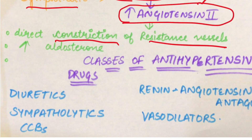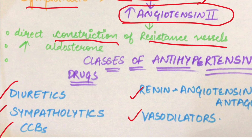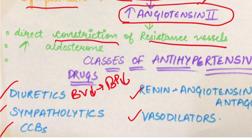If we want to treat hypertension, we give anti-hypertensive drugs. The classes are: diuretics, sympatholytics, CCB (calcium channel blockers), renin-angiotensin antagonists, and vasodilators. Diuretics like thiazides and loop diuretics are used because they reduce blood volume by secreting fluid, eventually decreasing blood pressure.